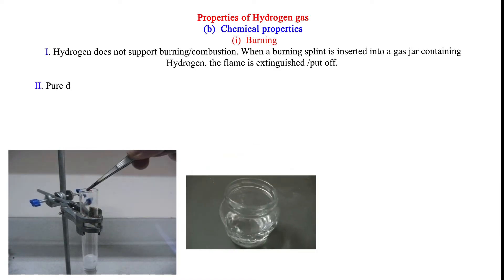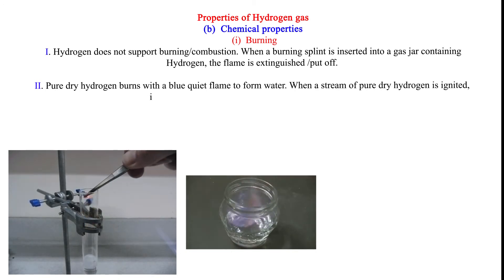2. Pure dry hydrogen burns with a blue quiet flame to form water. When a stream of pure dry hydrogen is ignited, it catches fire and continues to burn with a blue flame.